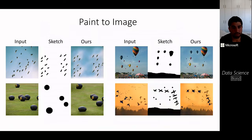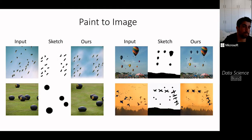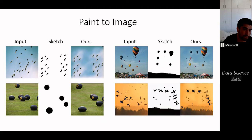Other interesting applications include translating a rough black-and-white sketch to a photo-realistic image. We can take a sketch of birds and produce a realistic image of birds using just a single input image of birds. Similarly for a hot air balloon: given just one image of hot air balloons and a rough sketch, you can produce a realistic image aligned with the sketch.